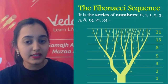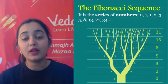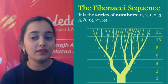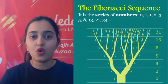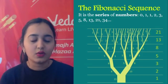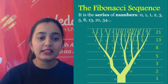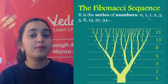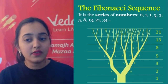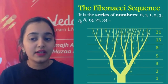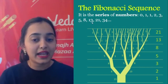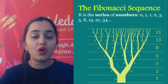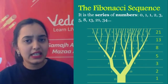The Fibonacci sequence — a series of numbers you may have heard of in math or computer science. It is nothing but the series: 0, 1, 1, 2, 3, 5, 8, 13, 21, 34, and so on. What is special in this series? Every number from the third position onward is the sum of the previous two numbers. For example: 1 = 0+1, 2 = 1+1, 3 = 2+1, 5 = 3+2, 8 = 5+3, 13 = 8+5. So every number is the sum of the previous two, and it goes on and on.